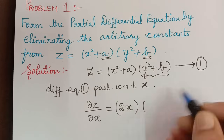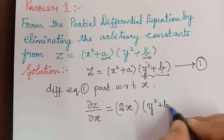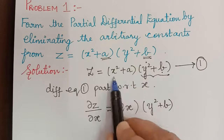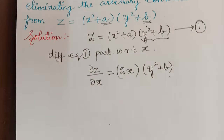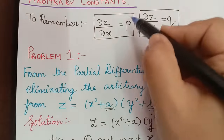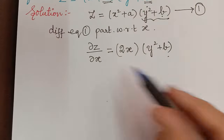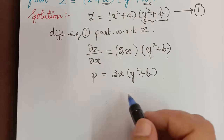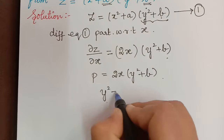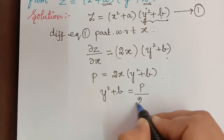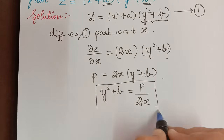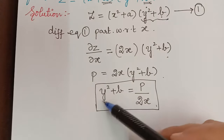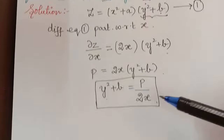So we get 2x multiplied with (y² + b), since (y² + b) remains constant under partial differentiation with respect to x. Since ∂z/∂x is represented as p, we have p = 2x(y² + b). From this, we can write y² + b = p / (2x). We are expressing it this way because we want to substitute this in equation 1 later.